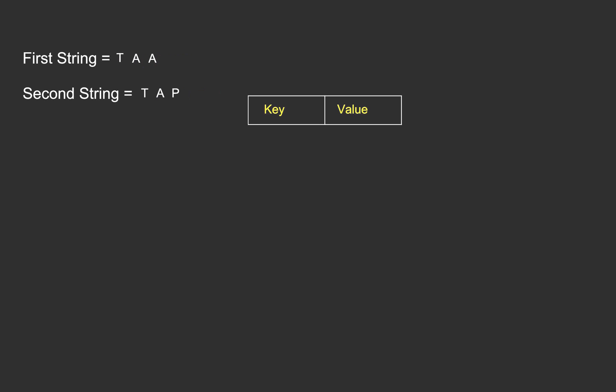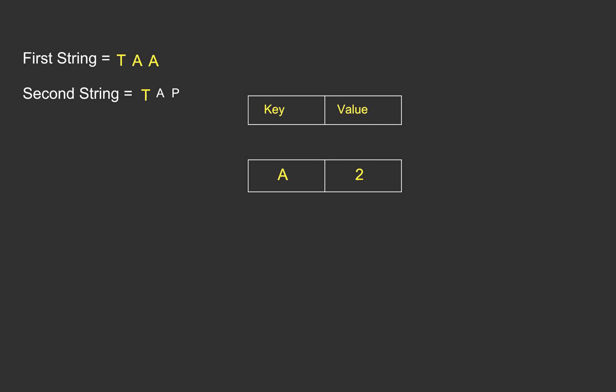Let's take one more example — a non-anagram example. We follow the same two steps, populating the hash map by iterating over the first string. The first character T has occurrence one, the second character A has occurrence one, and then we see the string has a duplicate character A, so we increment its value to two in the hash map. Now we iterate over the second string. We start with character T — it is present in the map, so we remove its entry. We move to character A — it is present with occurrence two, so we decrement its value by one. We then move to the next character B and check that our map does not contain this character. So we return from here declaring that the two strings are not anagrams.